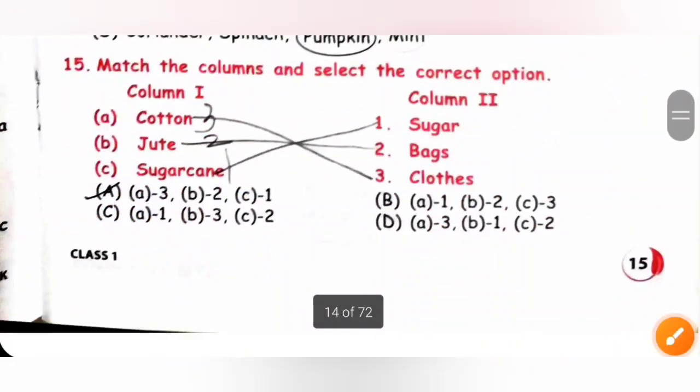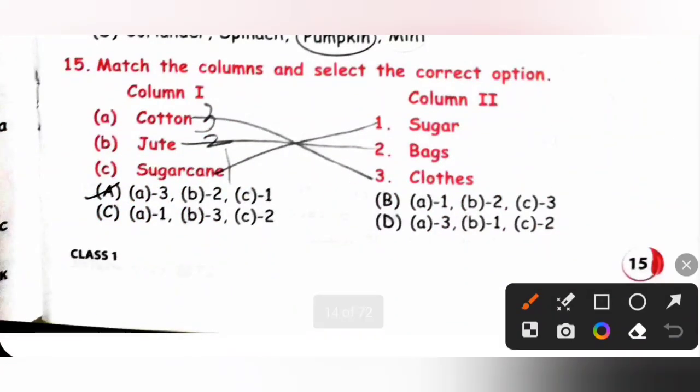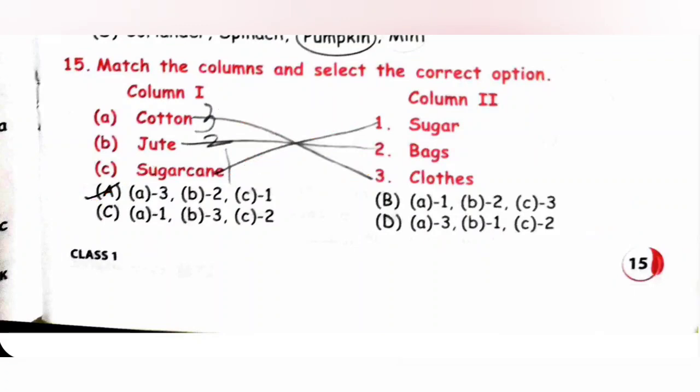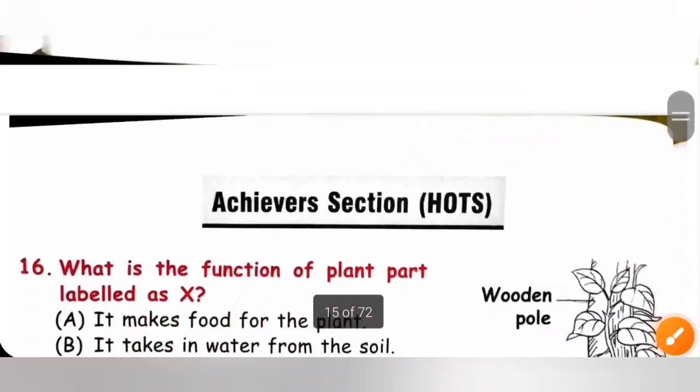Fifteenth, match the columns and select the correct option. Cotton, which is used to make cloth, so A3. Either option A or D will be correct. Jute is used to make bag, so B2. So option A is the correct answer. Sugarcane is used to make sugar. So A3, B2, C1, option A is the correct answer. Next achiever section.